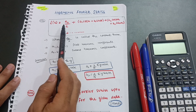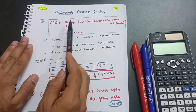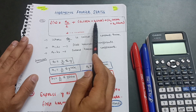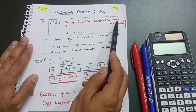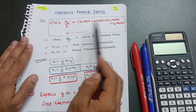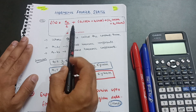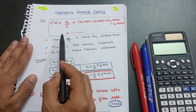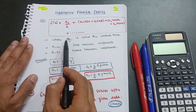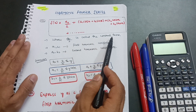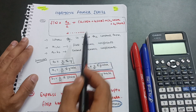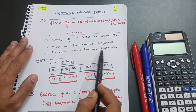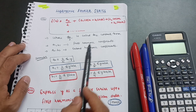You have to remember the formula: f(x) = a₀/2 + a₁cos(x) + b₁sin(x) + a₂cos(2x) + b₂sin(2x) + ... and so on. This is the Harmonic Fourier Series formula, where a₀/2 is the constant term, a₁ and b₁ are the first harmonic coefficients, and a₂ and b₂ are the second harmonic coefficients.